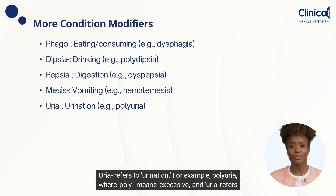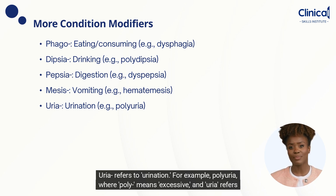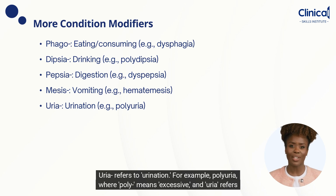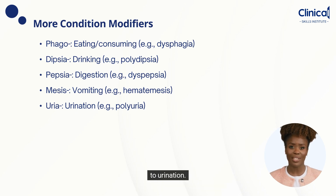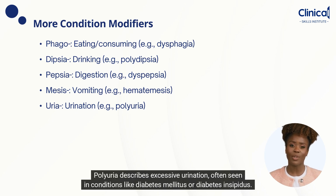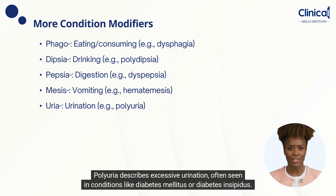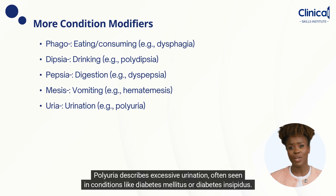Uria refers to urination. For example, polyuria — where poly means excessive, and uria refers to urination — describes excessive urination, often seen in conditions like diabetes mellitus or diabetes insipidus.